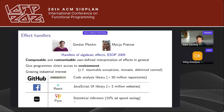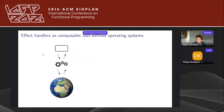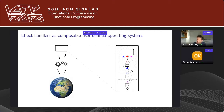Effect handlers are actually seeing quite a lot of impact in industrial practice. This picture depicts effect handlers as composable user-defined operating systems — inside our program we might have these little effect handlers providing various interfaces that you can plug together.